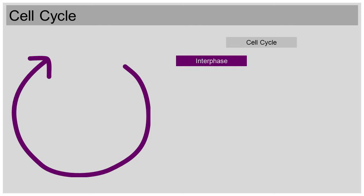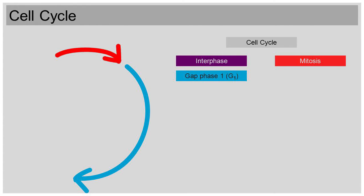The cell cycle can roughly be divided into an interphase and a mitotic phase. The interphase can again be broken up into three sections. Gap phase 1 or G1 phase, S phase, S for DNA synthesis, and gap phase 2 or G2 phase.